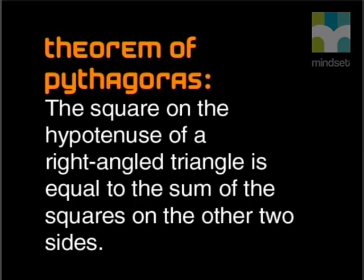Do you remember what Pythagoras theorem states? The theorem states that the square on the hypotenuse of a right-angled triangle is equal to the sum of the squares on the other two sides.